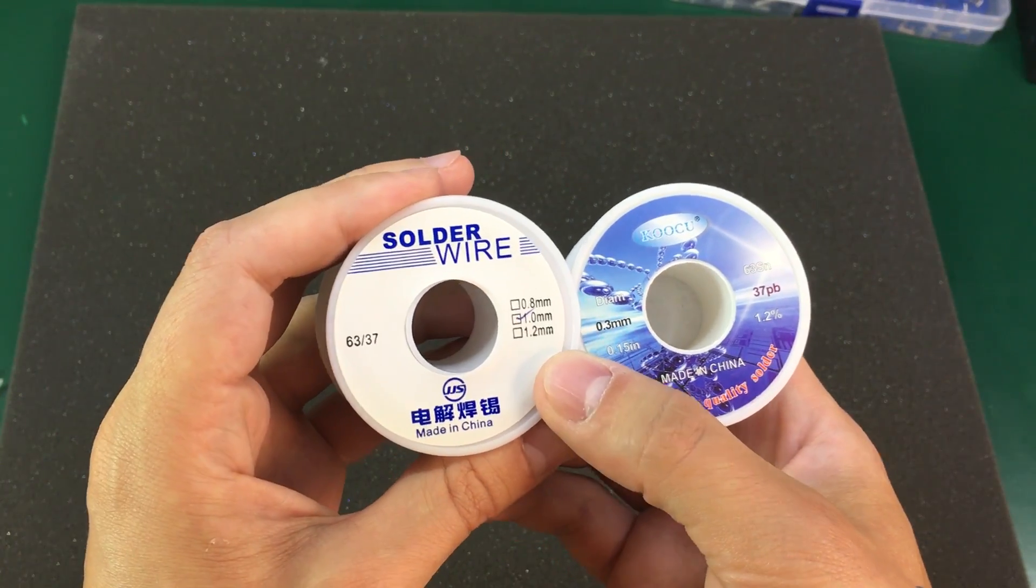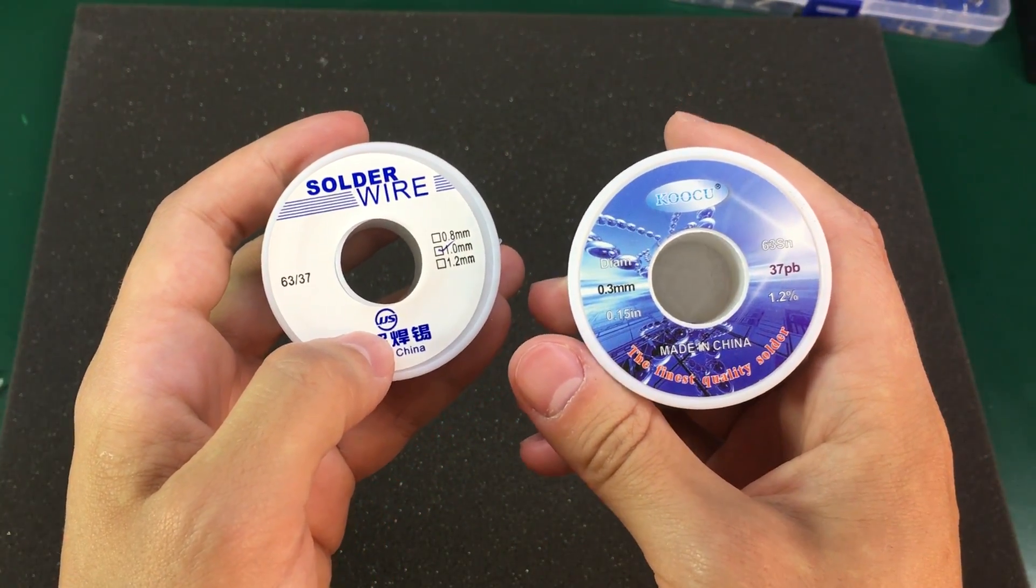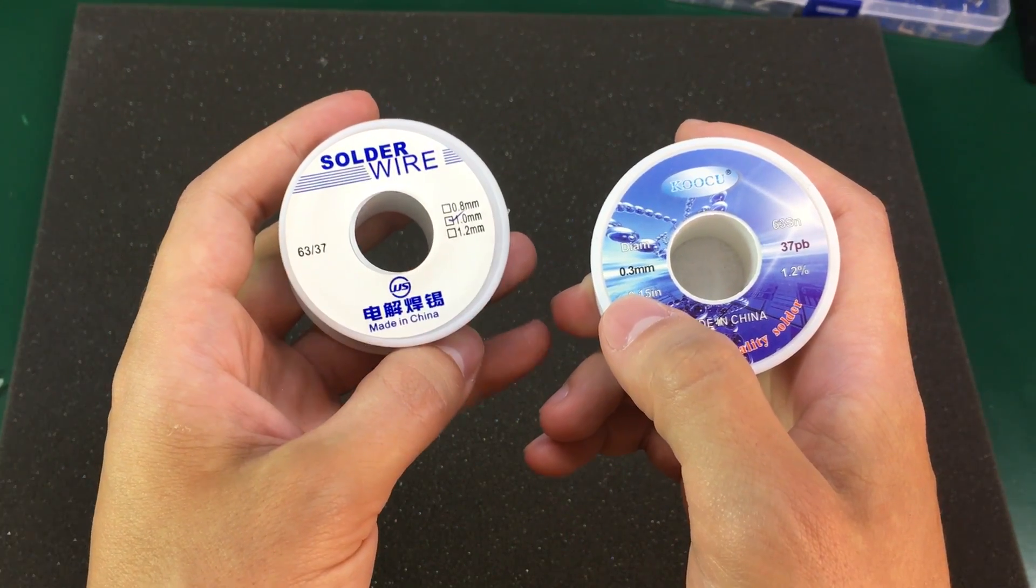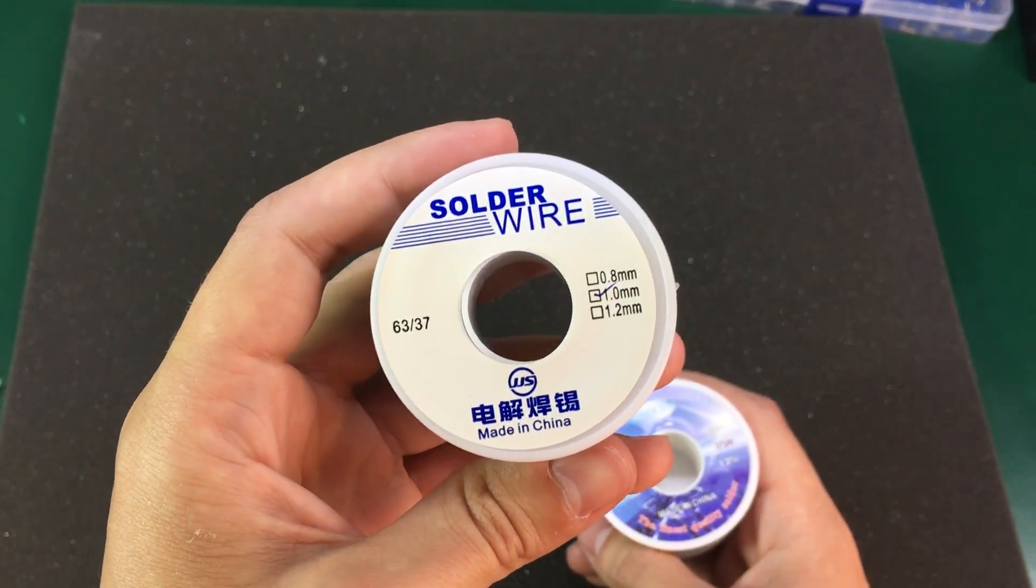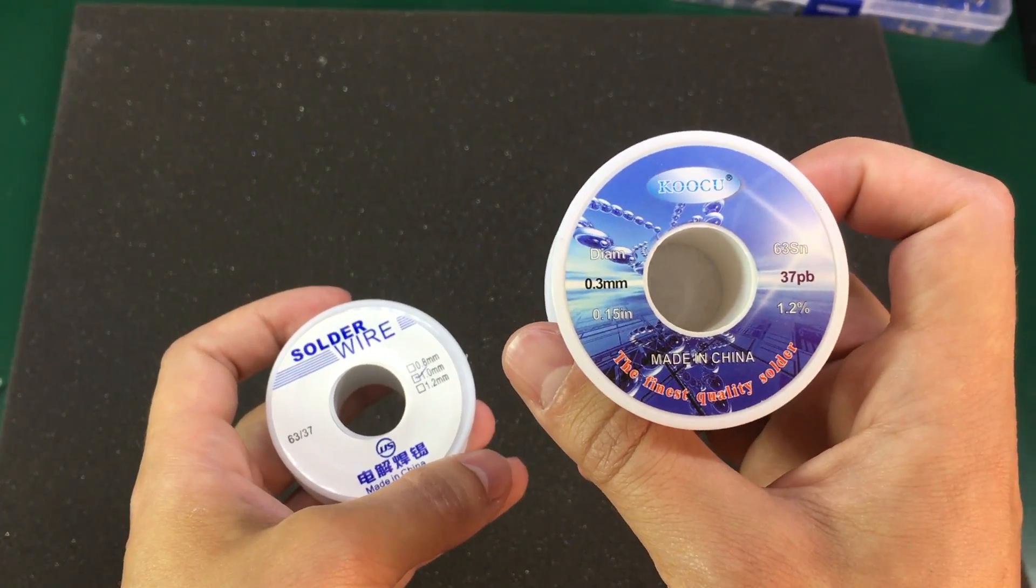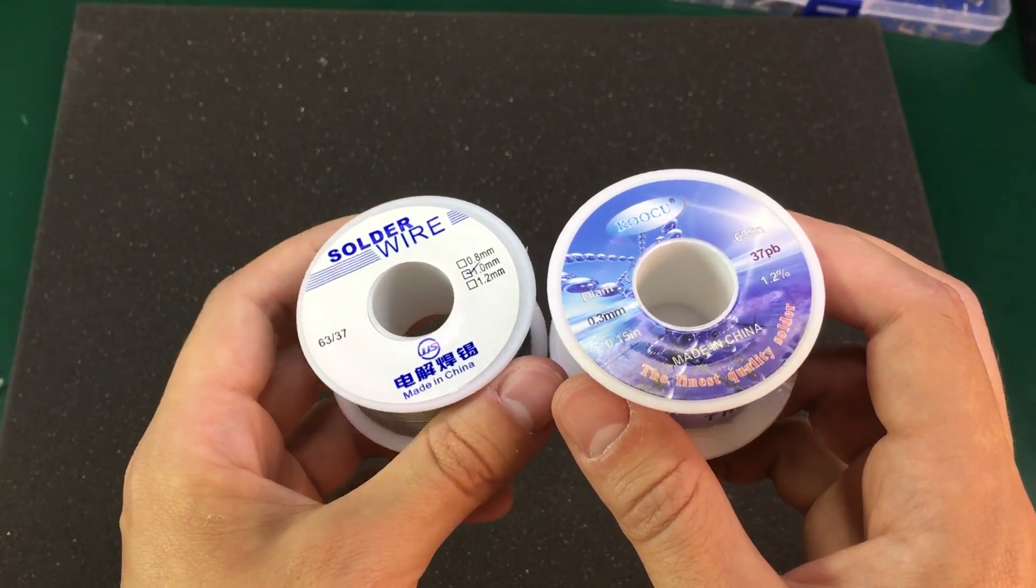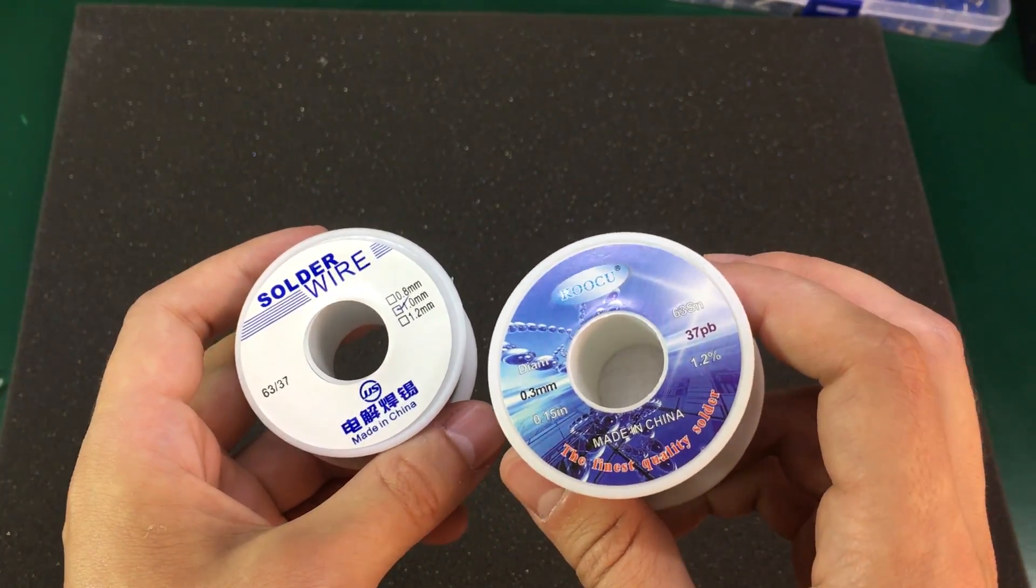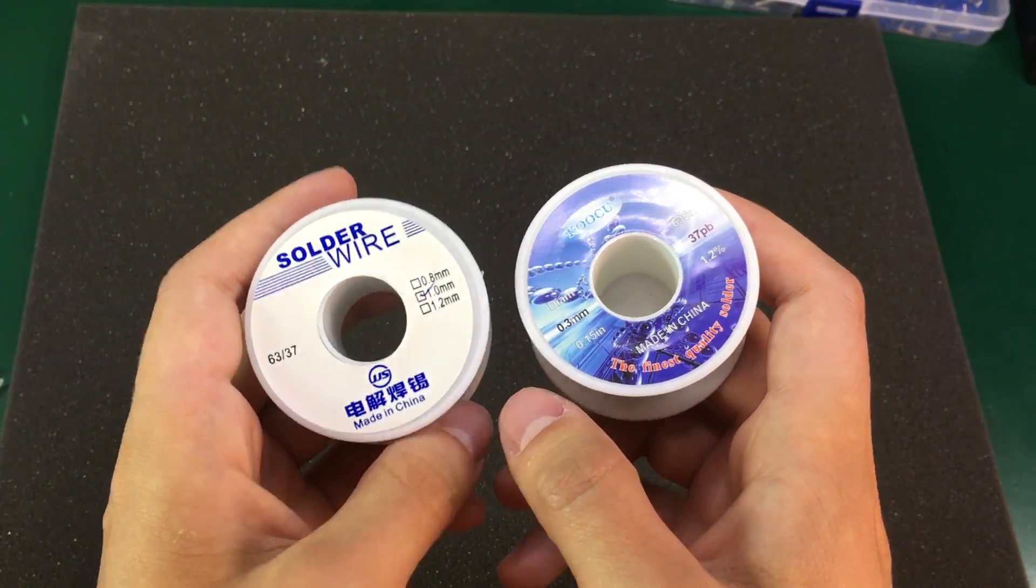Next I got myself some solder wire leaded type in two sizes. This one is 1 mm thick and this one is 0.3 mm. I use the 1 mm for general purpose soldering and the 0.3 mm for micro soldering. When trying to solder some very small SMD components. They're both 63/37 rosin core.